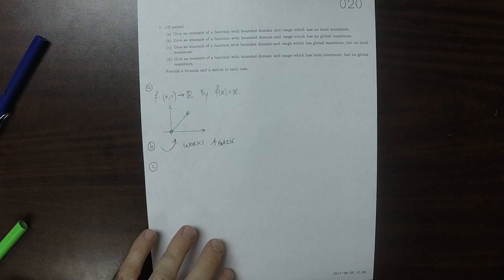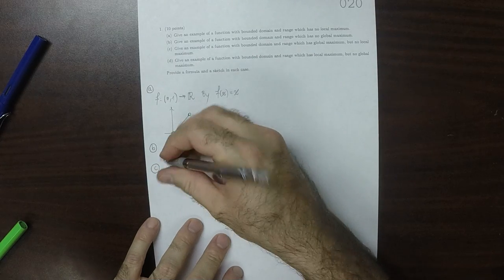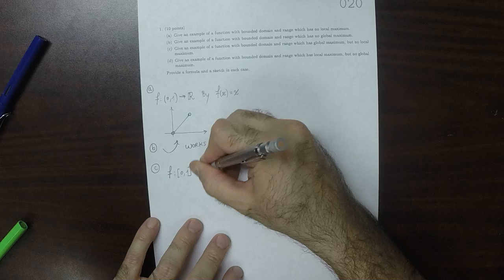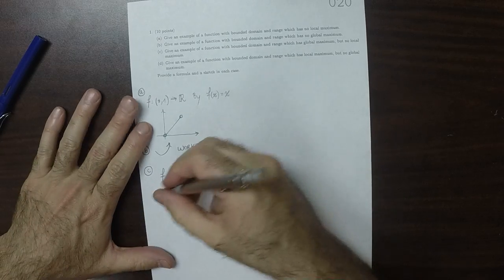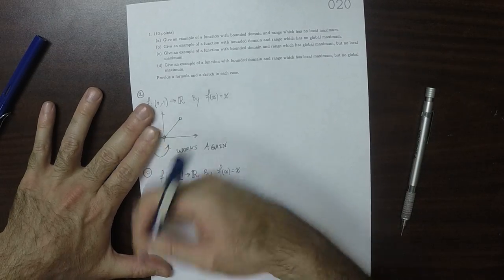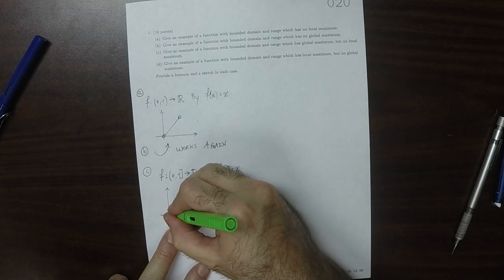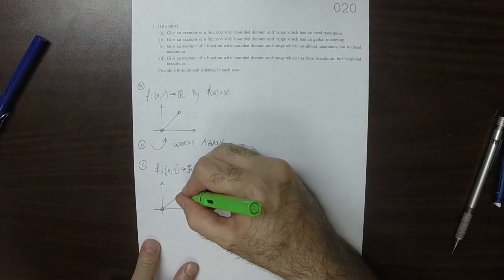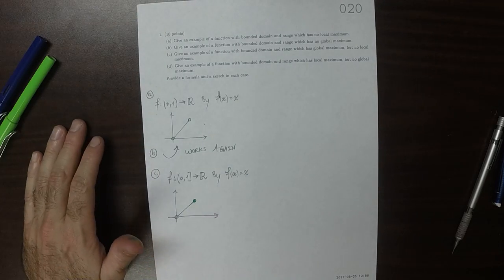C has a global but not a local maximum. So how about f from [0,1) to the reals? Again, by the identity. To make the smallest possible change to A and B, I'll leave it open at 0. So it's open here and then goes up to here and it's just like the previous one, except we fill in that hole. So that's a global maximum that's not local. It's not local because it's occurring on a boundary, essentially.